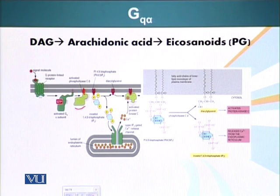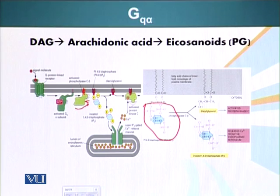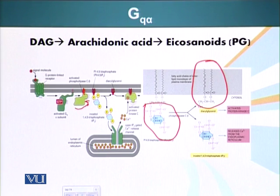Once phospholipase C is activated, it cleaves a molecule of phosphatidylinositol bisphosphate. Phospholipase C is an enzyme that cleaves a lipid molecule, producing two molecules: inositol trisphosphate (IP3) and diacylglycerol (DAG). DAG can serve as an anchor to which protein kinase C can attach.